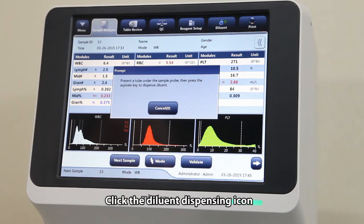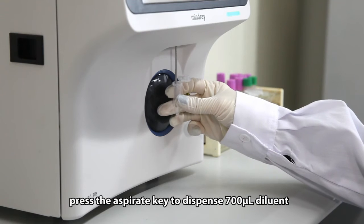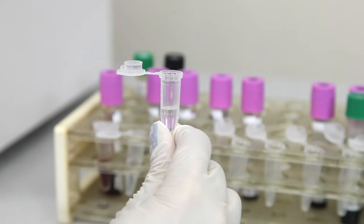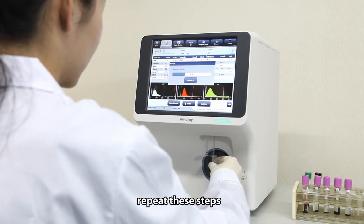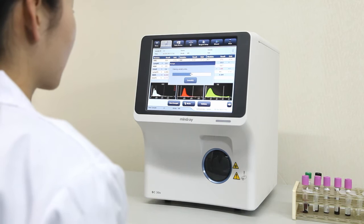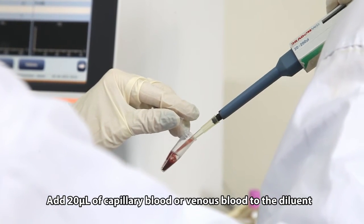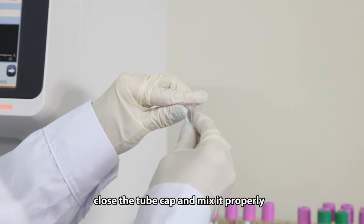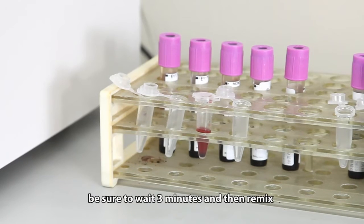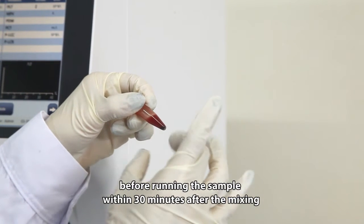Click the dilute dispension icon, then present a clean tube to the sample probe. Press the aspirate key to dispense 700 microliters diluent. To continue with diluent dispensing, repeat these steps. Click cancel after preparing all the diluents. Add 20 microliters of capillary blood or venous blood to the diluent. Close the tube cap and mix it properly. After mixing the capillary sample with the diluent, be sure to wait 3 minutes and remix it before running the pre-diluted sample within 30 minutes after mixing.